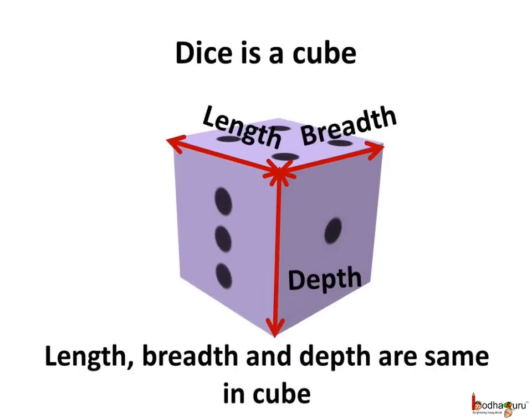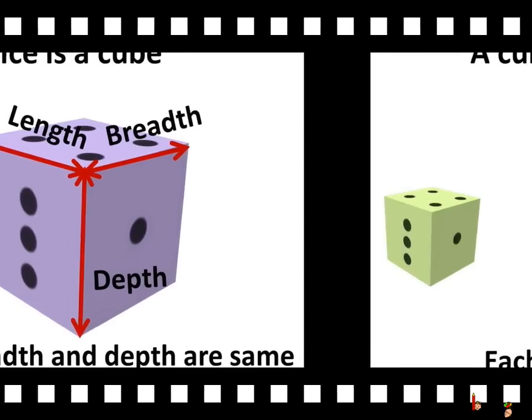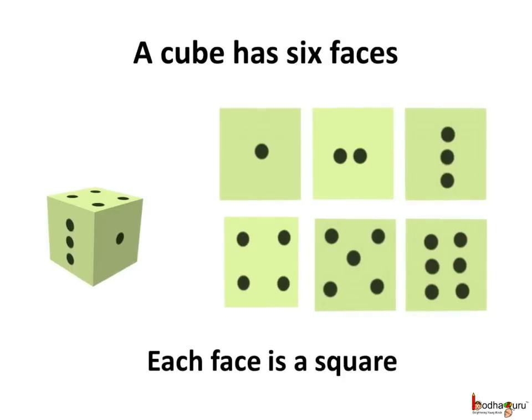So this is a dice and the solid shape is called a cube. In a cube, the length, breadth, and the depth are all the same. As a cube has six surfaces, we can say a cube has six faces, and each face is a square.